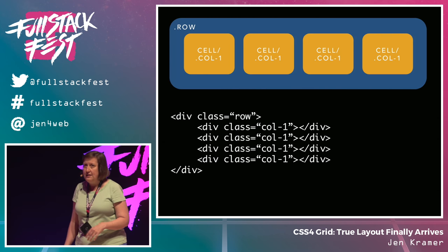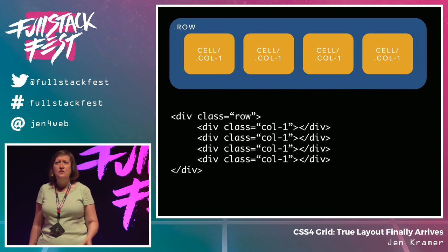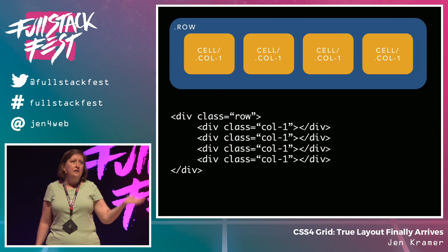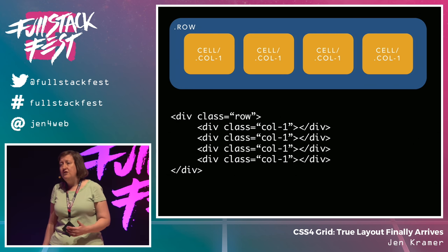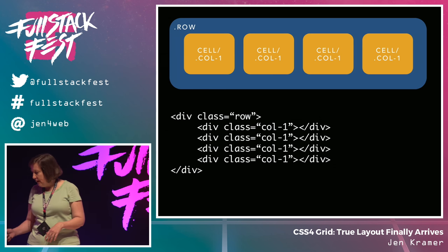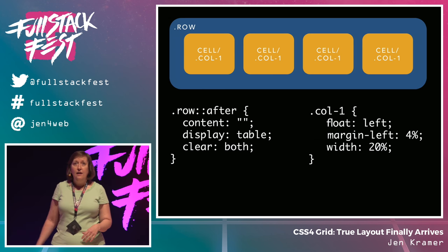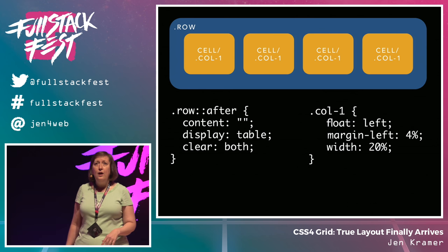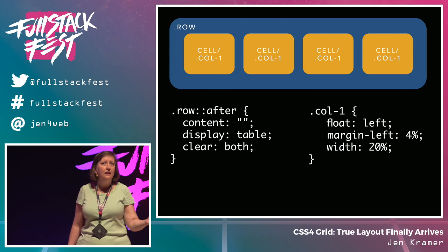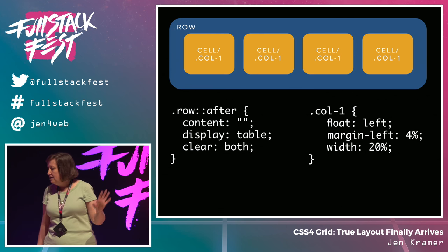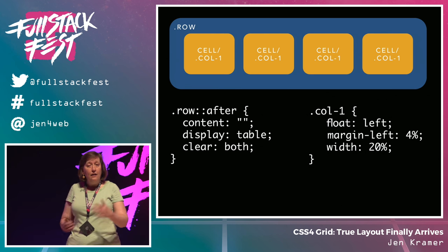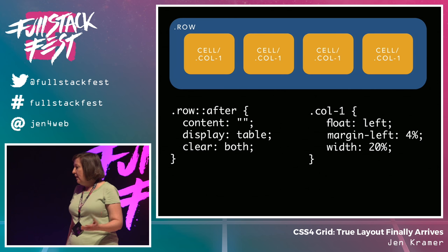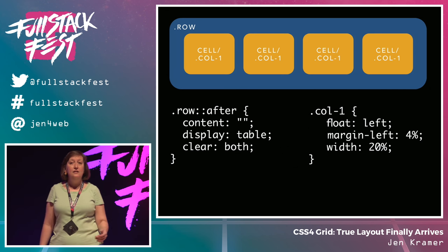Here we have a row and a series of cells. Our HTML markup might use div tags — though you can use whatever more semantic HTML is appropriate to your particular problem. The CSS has a style for your row: an incantation that does a clear for a bunch of different kinds of browsers. On the right side, what makes your cells float next to each other: a float left, a margin, and a width associated with that. They stretch nicely across the page.